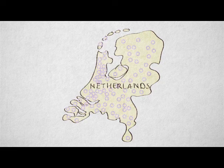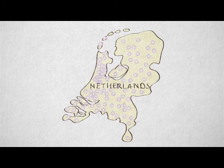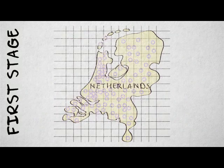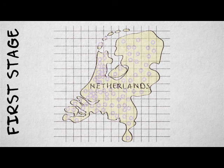A solution is to randomly sample in stages by first selecting clusters of elements. Say we want to sample math performance in the population of all Dutch students currently in their third year of secondary education. We start by forming a sampling frame of all school districts. This is the first stage, where students are clustered in districts. We randomly select a very small sample of school districts.